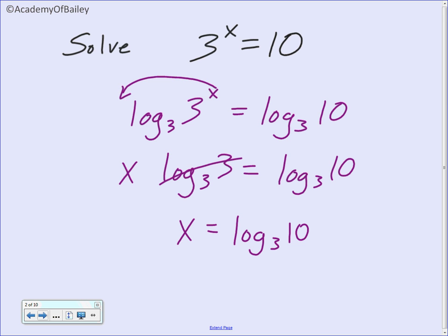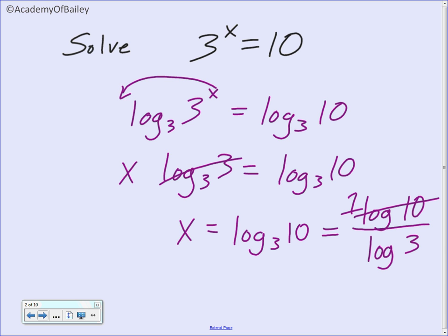If you need to simplify that into a decimal, you will want to use your change of base formula. The change of base formula says that log base 3 of 10 turns into a fraction: log base 10 of 10 over log base 10 of 3. And log base 10 of 10 cancels to become 1, so you have 1 over log of 3.